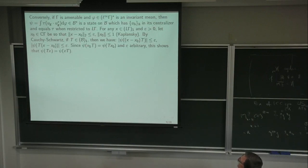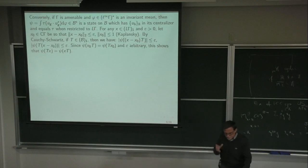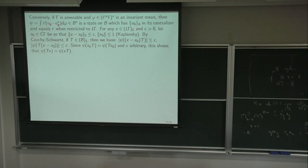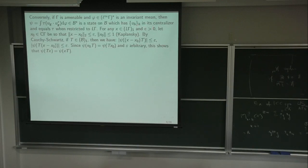Now I'm applying Cauchy-Schwarz: Ψ of (X − X₀)·T is bounded by Ψ(P·P*)^{1/2} · Ψ((X − X₀)*(X − X₀))^{1/2}. But Ψ restricted to L(Γ) is the trace, so this is norm-2 of (X − X₀) times something bounded by 1, giving ε. The same with the other factor except you get X₀ − X₀ star — but Ψ is a trace, so it doesn't matter on which side you take the star. So these are equal, and you get the result.